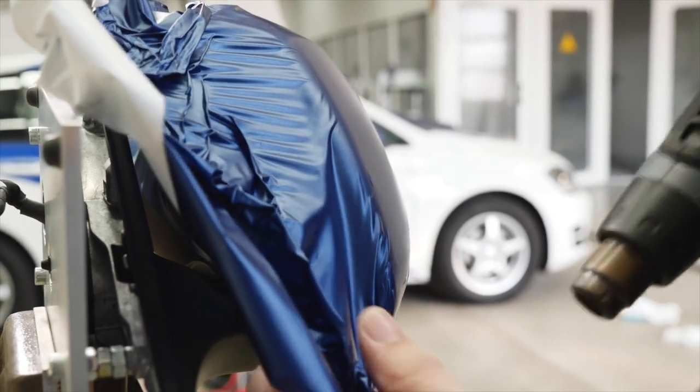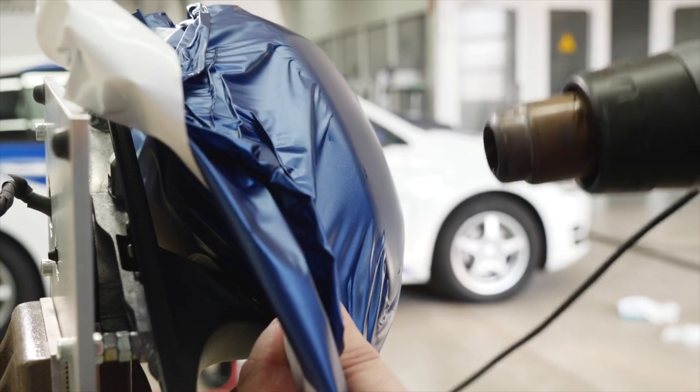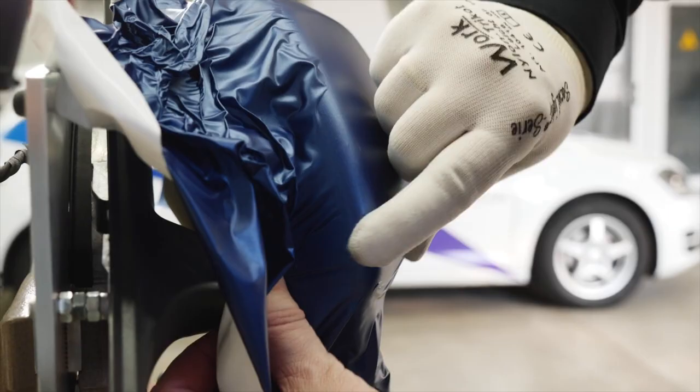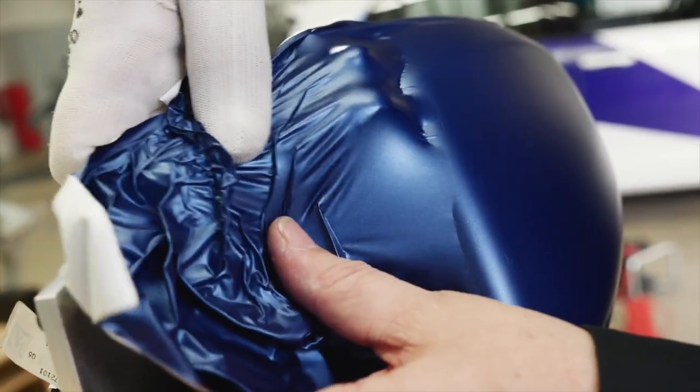Now turn the mirror and use heat to apply the film around the edge of the vertical undercut part of the mirror. Continue the application and make sure to overlap the area where the knifeless tape has been applied.